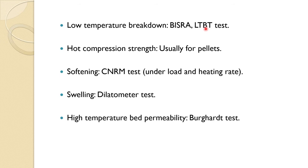Hot compression strength is necessary especially for pellets, because in a very high blast furnace — 30 meters high — there is a very high load, and the pellet should be able to withstand it. So compression strength is tested for the pellet. The softening test is again very important — softening should usually occur at high temperature. For that, the CNRM test is done under loading and different heating rate. Swelling is another parameter, especially for pellets or even iron ore, measured using a dilatometer test.